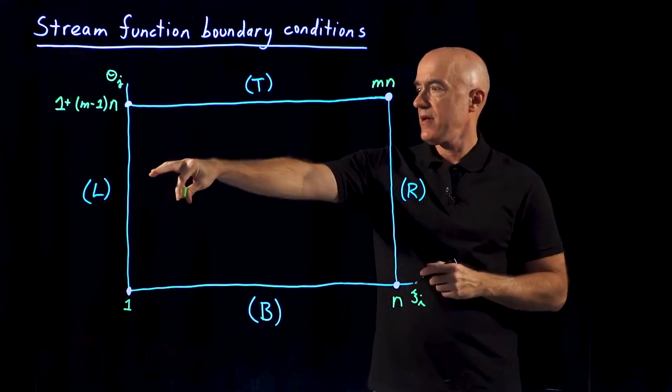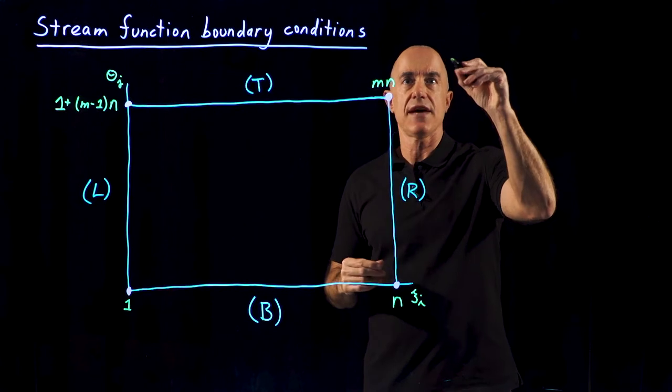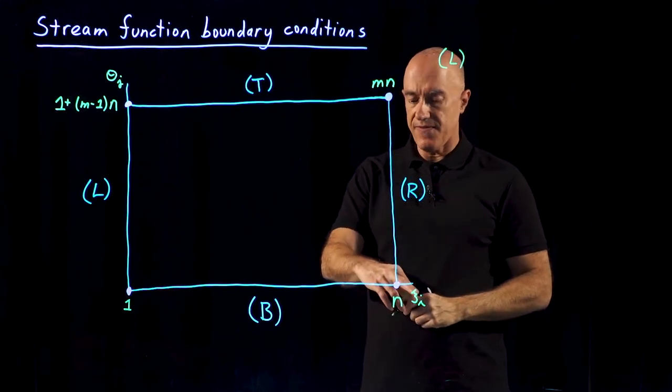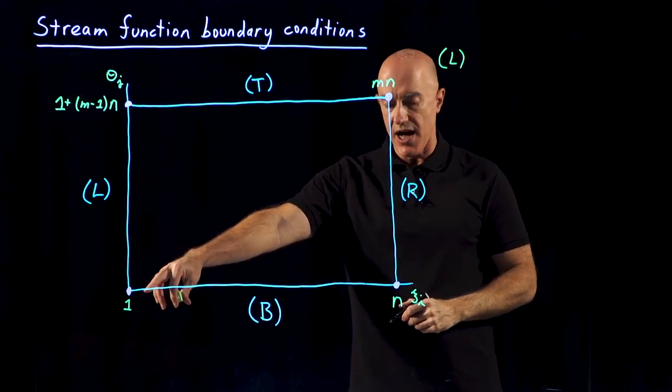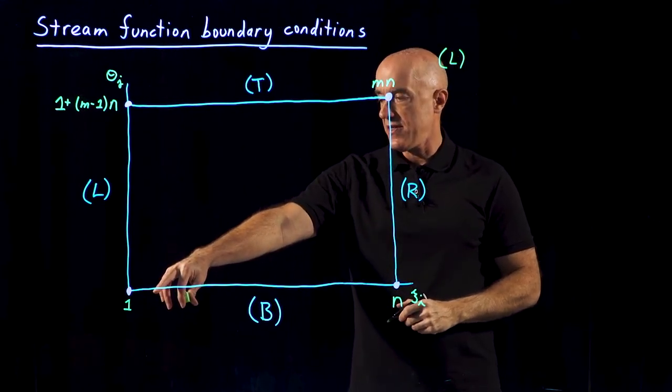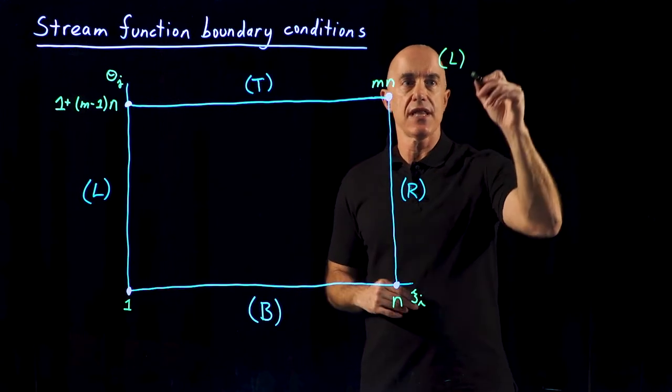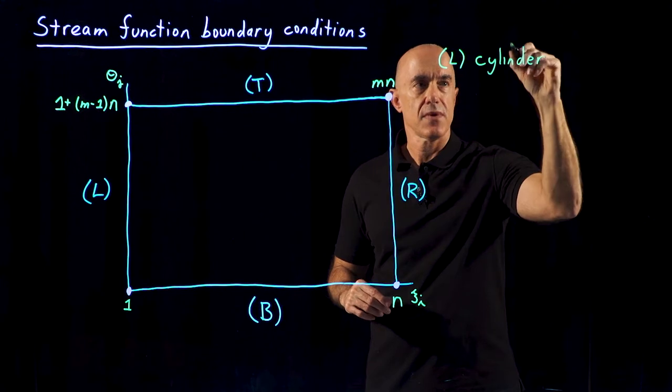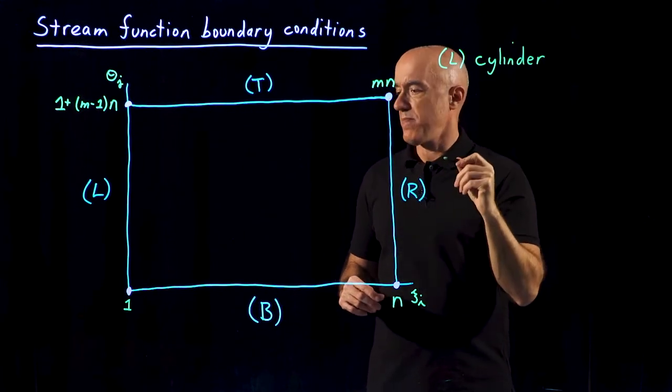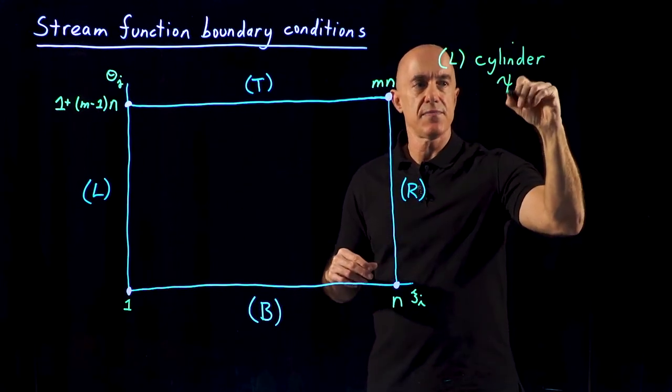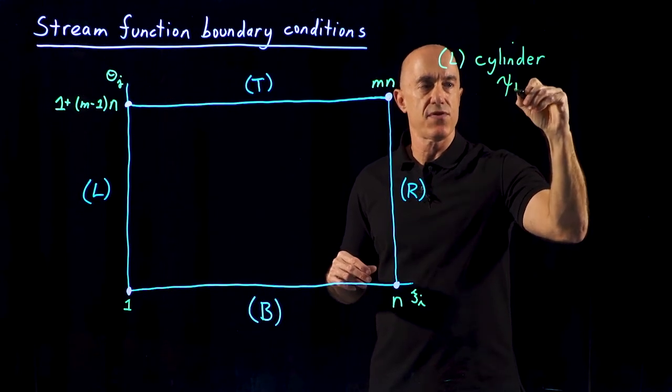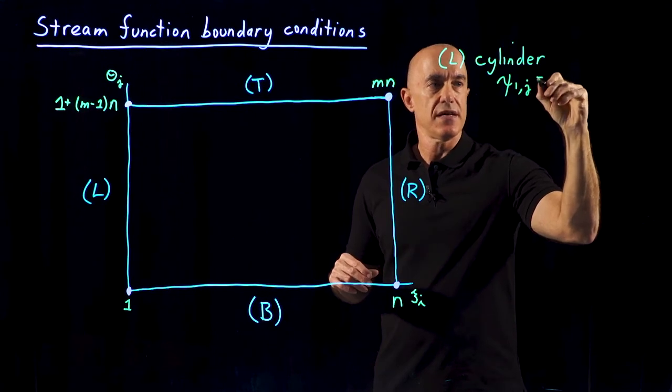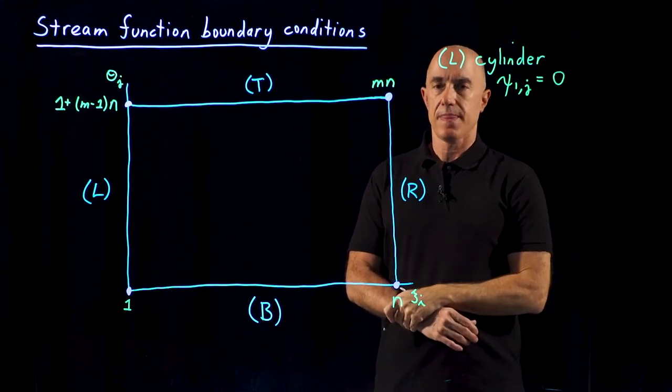So we need to now discuss what are the appropriate equations for the stream function on the boundary. So let's go one by one. We'll start with the left-hand side. That's at the first grid point in Kasai, which is on the cylinder. So the left-hand side is the cylinder boundary condition. The cylinder boundary condition for the stream function is simply the stream function at the first grid point on Psi at all the grid points in theta is equal to 0.